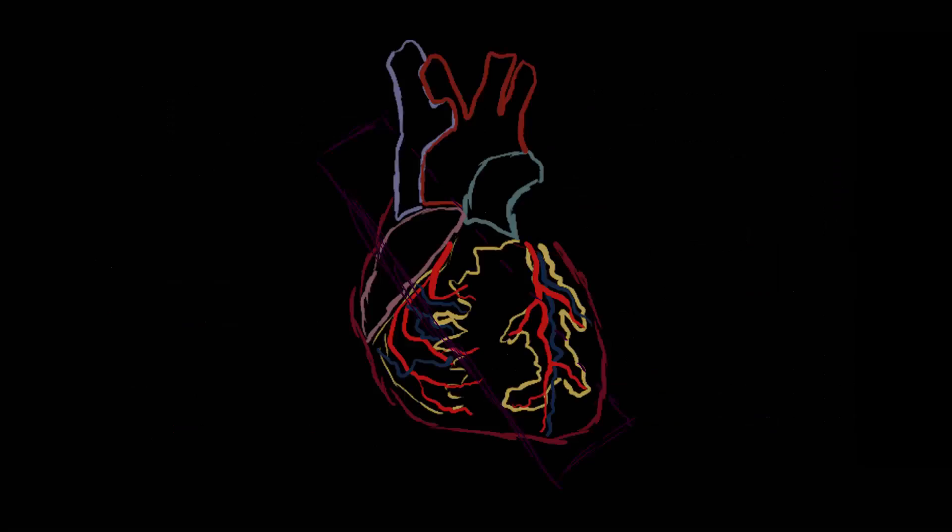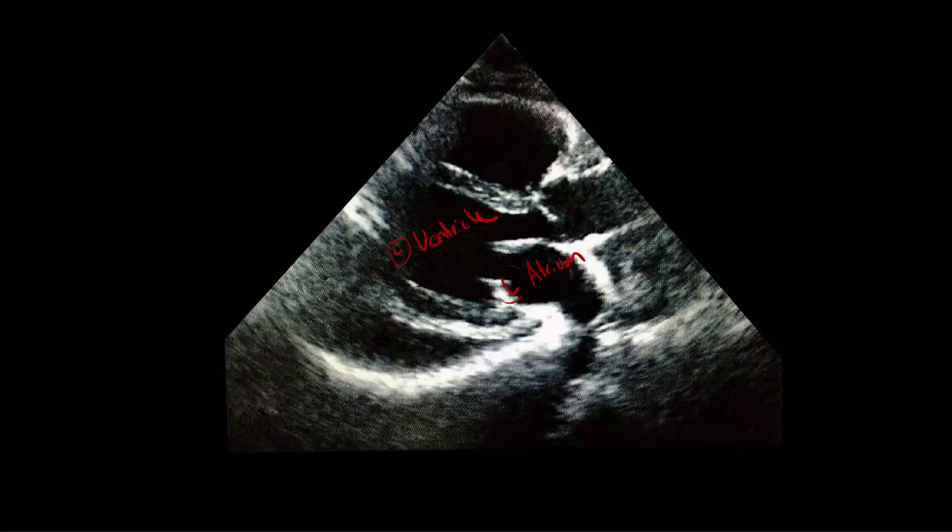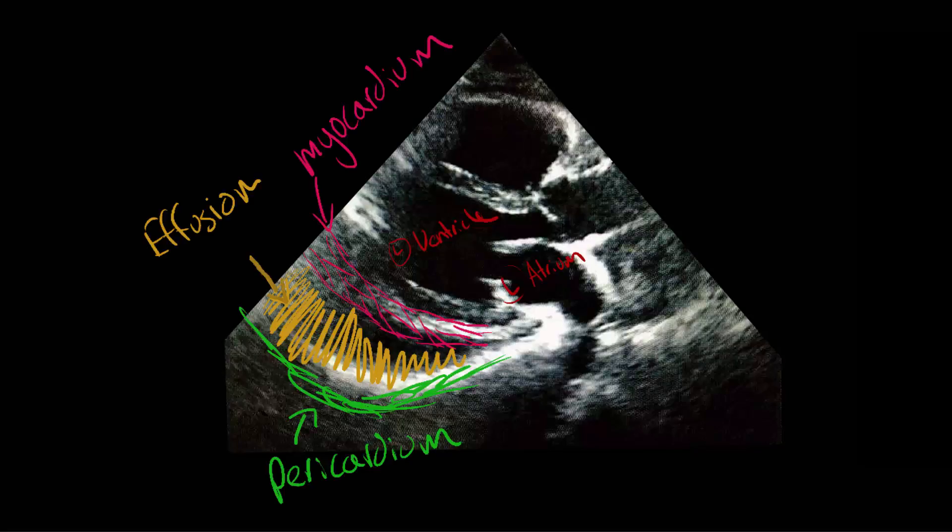Have an echo handy? An effusion may be present. Let's say we took an echo of the heart here. A normal heart would look like this. Left ventricle and atrium are these spaces, and here's the pericardium. An effusion would look like this, with the effusion here.